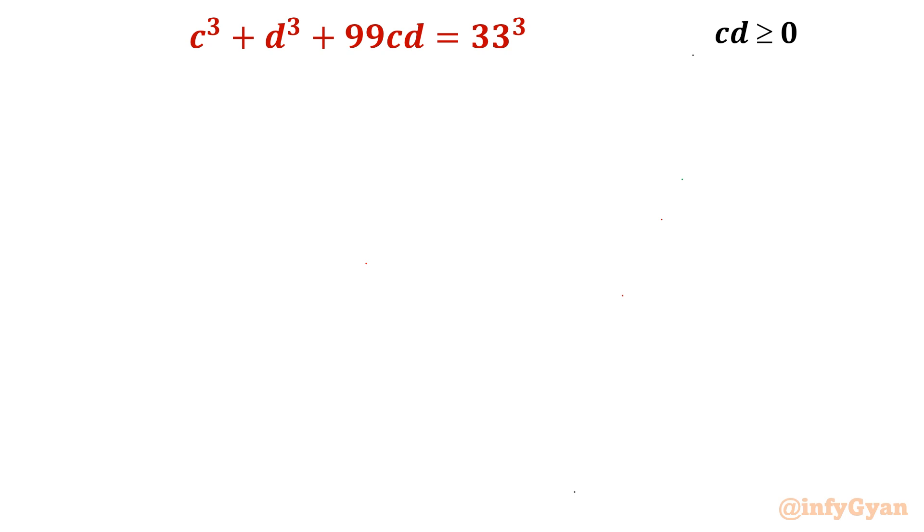Question is determine the number of ordered pairs of integers C, D for which the product CD is greater than or equal to 0 and c³ + d³ + 99cd = 33³.